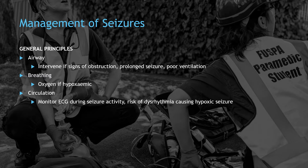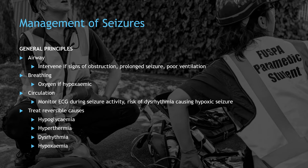Circulatory issues themselves are not common in seizure patients unless the seizure is due to a circulatory pathology, though in end-stage status epilepticus hypotension may appear. Otherwise it's important to treat reversible causes. Hypoglycemia can cause seizures and will be rectified by correcting blood glucose level; likewise, prolonged seizure activity can also induce hypoglycemia, propagating the seizure. Hypoxemia, dysrhythmias, and hyperthermia can also cause seizures and should be identified and managed.